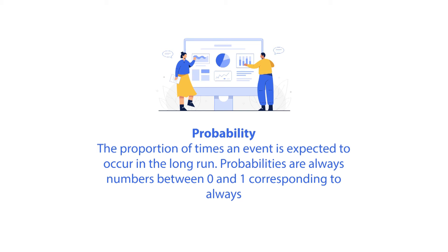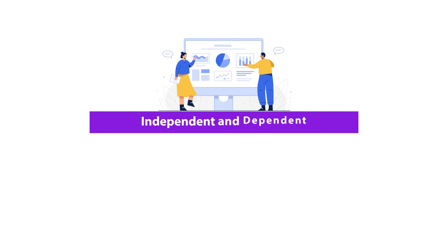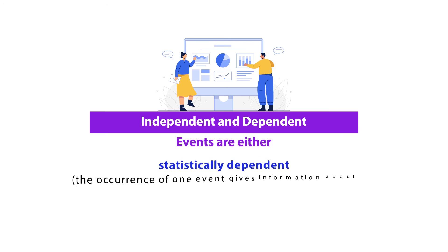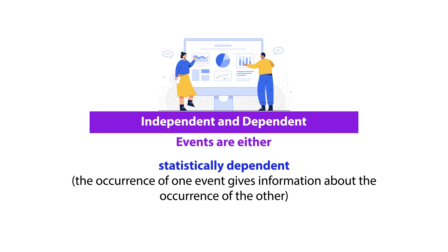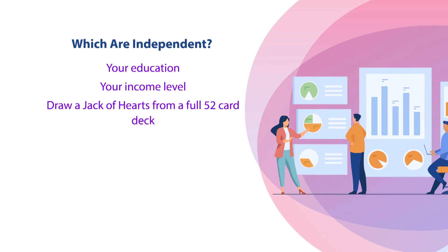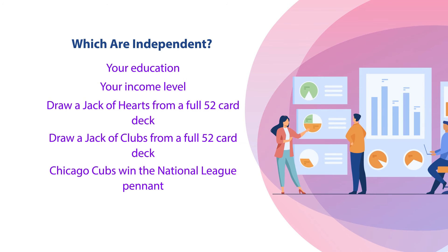Events are either statistically independent or statistically dependent. For statistically independent events, the occurrence of one event has no effect on the probability of occurrence of the other. For statistically dependent events, the occurrence of one event gives information about the occurrence of the other. Examples of independent events include drawing a jack of hearts from a full 52-card deck and drawing a jack of clubs from a full 52-card deck, or different cricket clubs winning different cricket series.